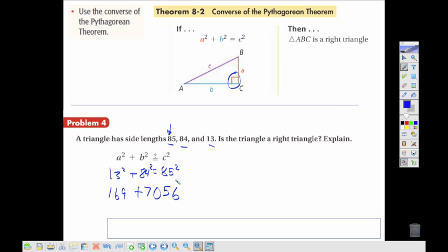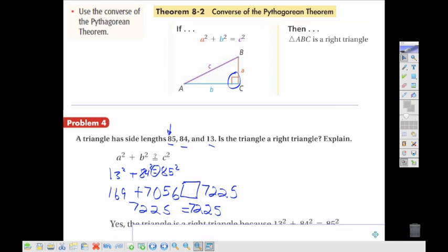And with the 85, we get 7225. Now really, we don't know this equals yet. That's actually what we're looking for - we're seeing if these are equal. Adding these together, we do get 7225, which is equal to what we got when we had 85 squared, so we can draw the conclusion that yes, this has to be a right triangle because it fits the Pythagorean Theorem.